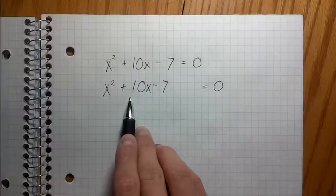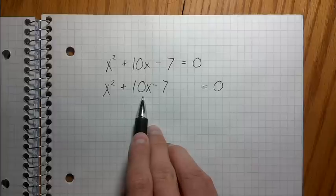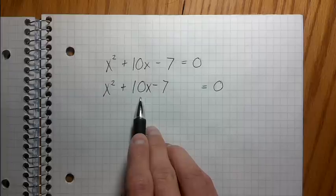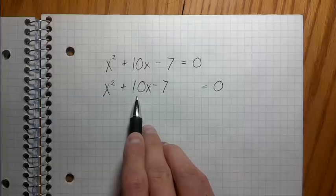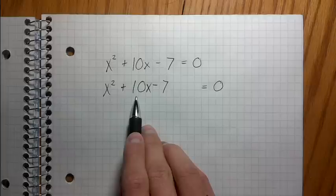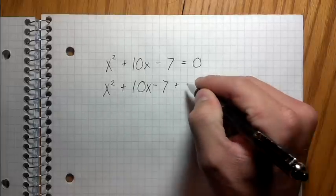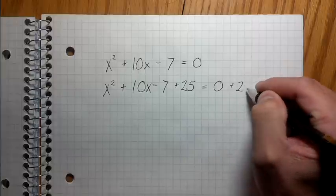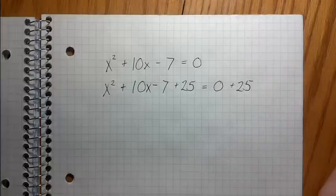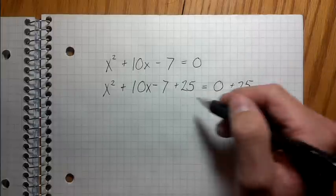So I'm gonna say it one more time. The first step in completing the square is taking half of the middle coefficient, dividing it by 2, squaring it, and then adding it to both sides. So half of 10 is 5, 5 squared is 25. So I'm gonna go plus 25, plus 25. It seems really arbitrary why I did that but it's gonna make sense in a second why I did this.